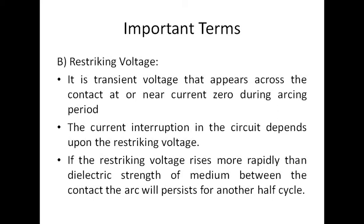The second term is restriking voltage. In the circuit breaker, when the arc forms between the moving contacts, we insert some medium to increase the dielectric strength, with the objective to extinguish the arc. If at any point the dielectric strength goes to zero, the arc is again restruck. At that instant, whatever voltage appears across the arc is known as the restriking voltage.